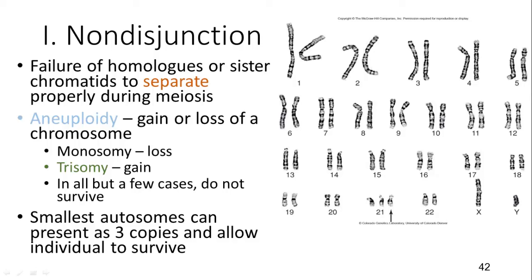Non-disjunction is an event where chromosomes don't go to opposite sides of the cell as they properly should during meiosis. An aneuploid is one that either loses or gains a chromosome. If it's a monosomy, it's a loss; if it's a trisomy, it's a gain. So monosomy means having one when you should have two, and trisomy means having three when you should have two. Most are terminal and will end in death, but very small chromosomes can present as three copies and allow survival. Trisomy 21 is Down syndrome, which leads to many genetic abnormalities but still allows survival of the offspring.